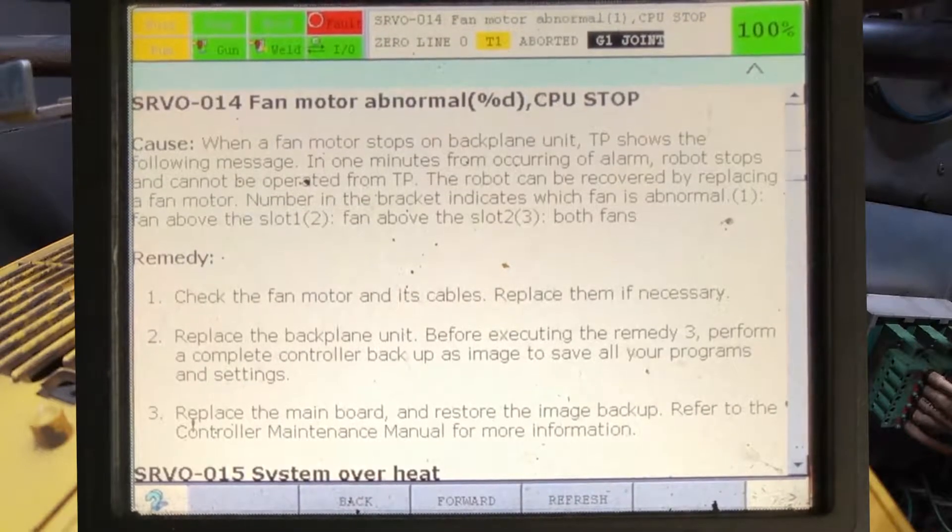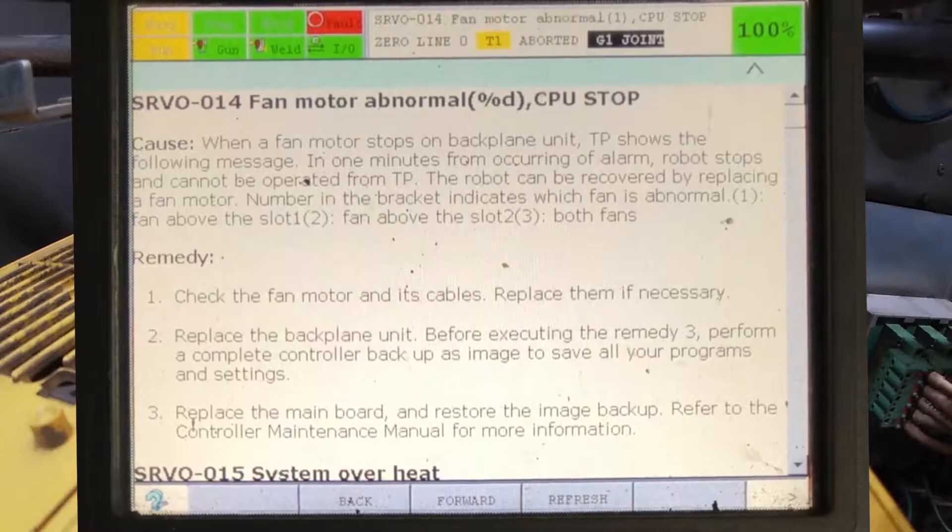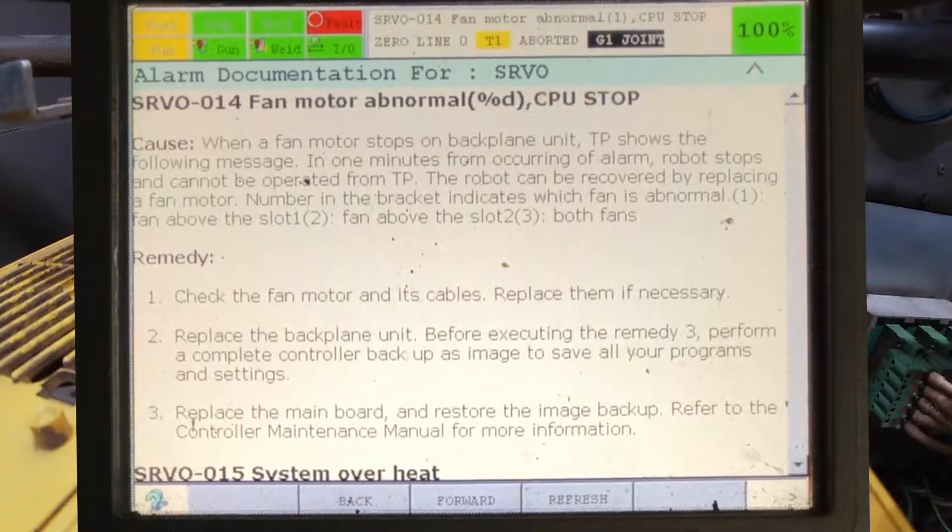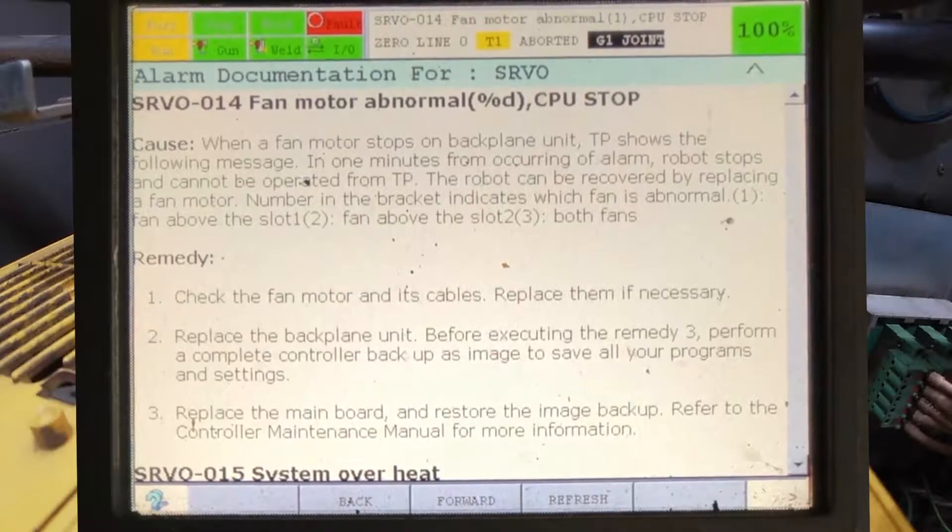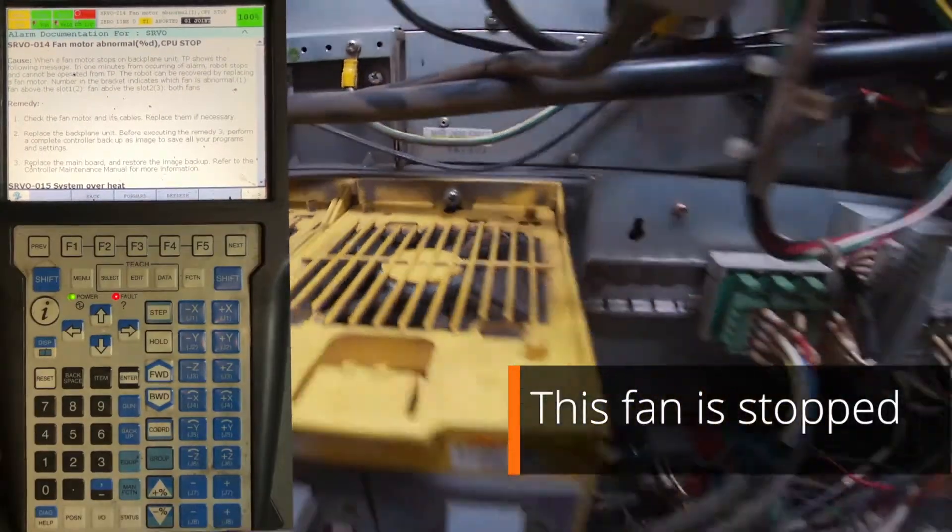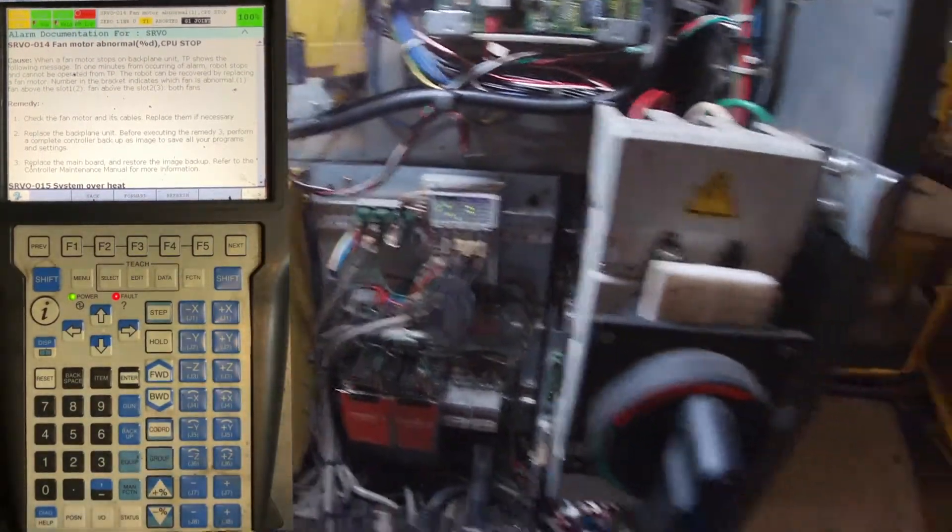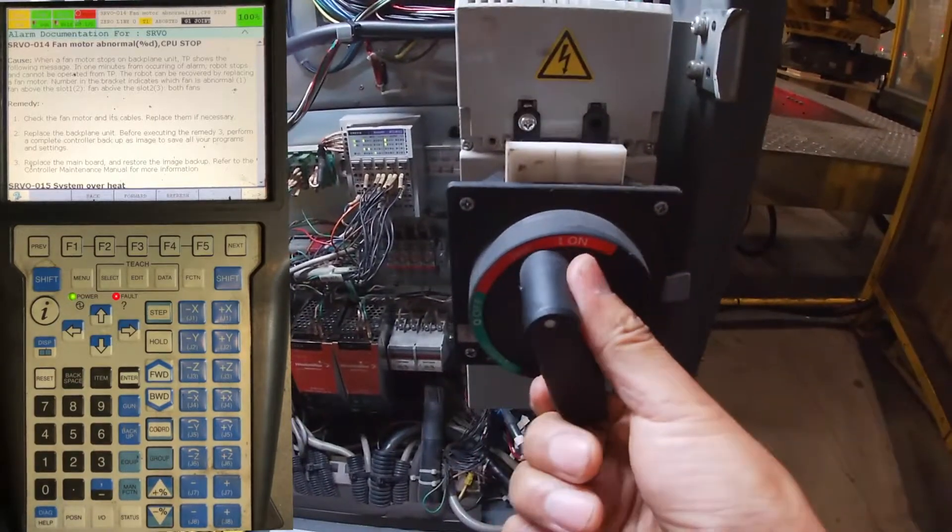When a fan motor stops on backplane, TP shows the following message. In one minute from occurring of alarm, robot stops and cannot be operated from TP. The robot can be recovered by replacing a fan motor. Number in the bracket indicates which fan is abnormal.